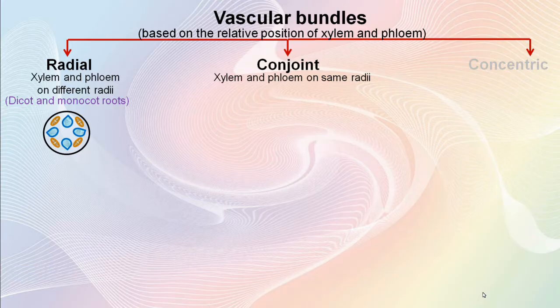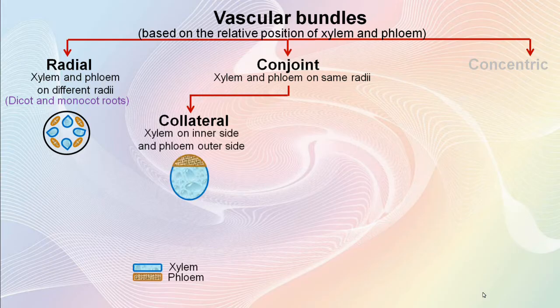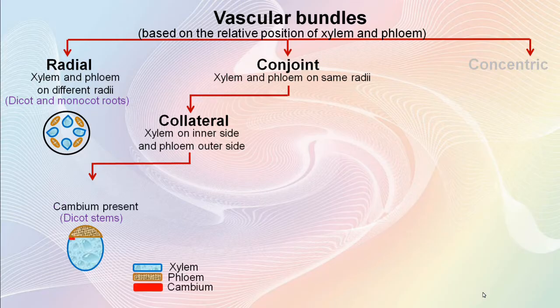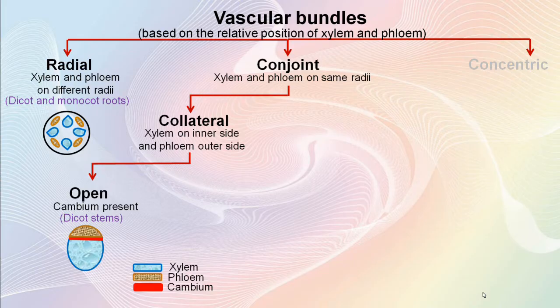A conjoint vascular bundle can be collateral. This means xylem is seen towards the inner side or centre of the stem, and phloem is seen towards the periphery or outer side of the stem. In dicot stems, the collateral vascular bundles contain a layer of actively dividing cells called cambium, seen in between xylem and phloem. Cambium is responsible for the secondary growth or thickening shown by dicot plants. Such conjoint collateral vascular bundles are called open vascular bundles, as they possess the ability to produce secondary xylem and secondary phloem during secondary growth.